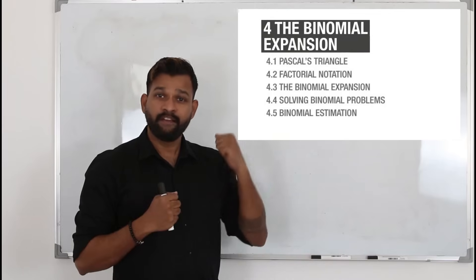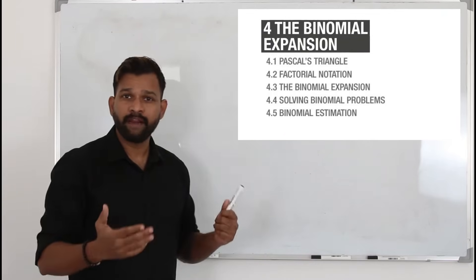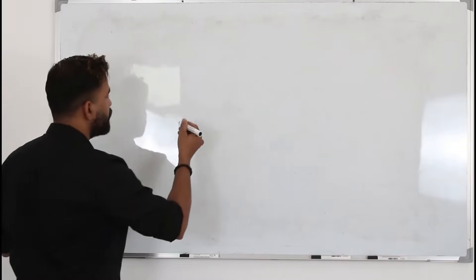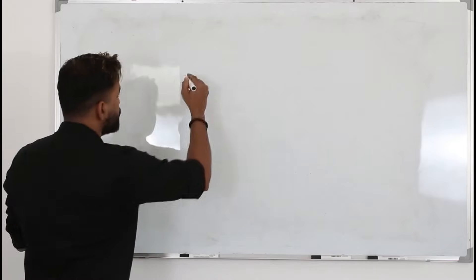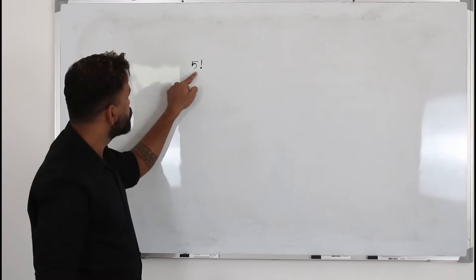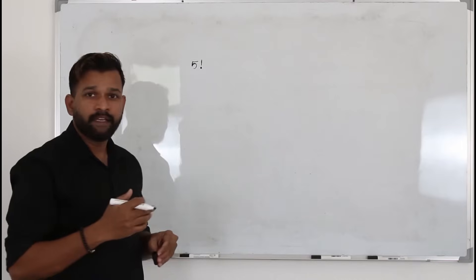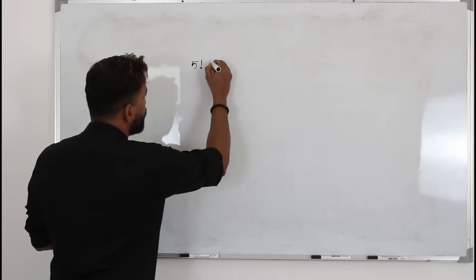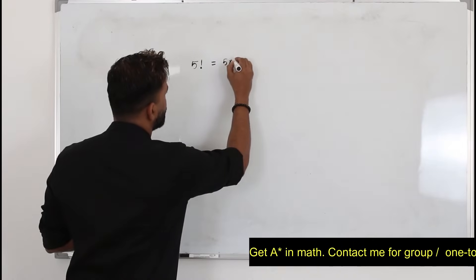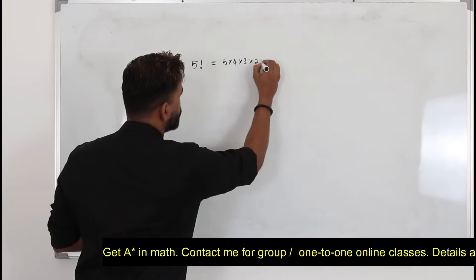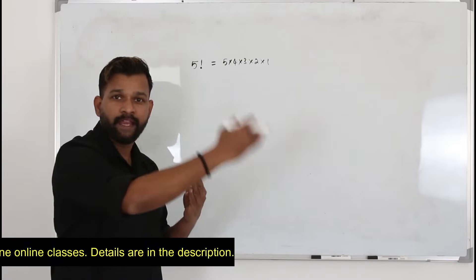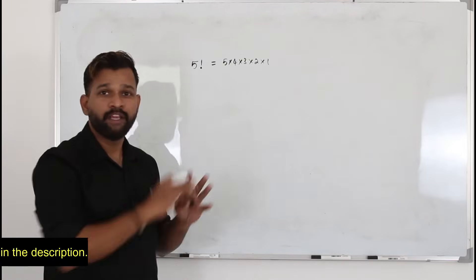Topic 4.2 is factorial notation. Before you learn binomial expansion, there are a few things you need to be aware of. The first one is factorial notation. What is a factorial? If you take a positive integer — it has to be a positive integer — let's say 5, you put this exclamation mark. This is called 5 factorial. It is defined as a multiplication of all integers from 5 down to 1, including 5. So if it is 10 factorial, it's 10 times 9 times 8 and so on, all the way to 1.